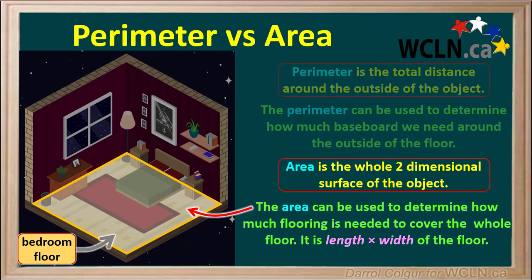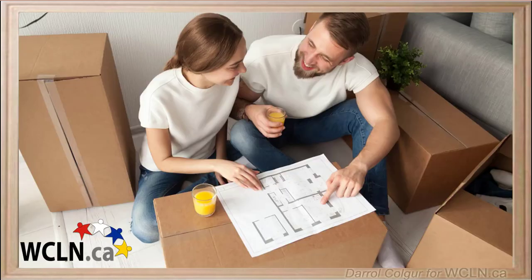Area is calculated by multiplying the room's length by its width. Being able to calculate or estimate perimeters and areas of various objects or rooms helps in many aspects of our life. For example, these two quantities are very important when people are making plans for a house.